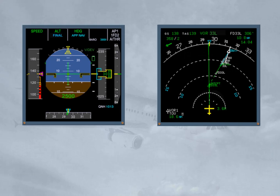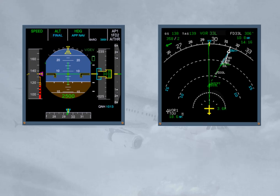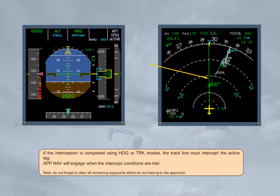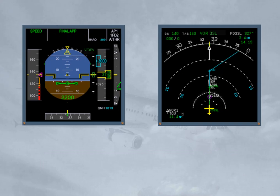Pushing the approach push button on the FCU will arm the lateral mode. Approach navigation and final are displayed in blue on the FMA. If navigation mode was already engaged, approach navigation engages immediately. If the interception is completed using heading or track modes, the track line must intercept the active leg, and approach navigation will engage when the intercept conditions are met. Do not forget to clear all remaining waypoints which do not belong to the approach. Final approach engages when the aircraft intercepts the descent profile. The final guides the aircraft on the profile down to MDA or MDH; a VDEV symbol shows the deviation from the pre-planned descent path.